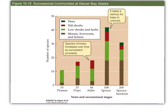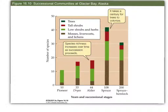Looking at how vegetation has changed over the years in terms of species richness — just the number of species, not taking into account relative abundances — this is years in successional stages: 10 years for pioneer, 33 years to the Dryas stage, not up to spruce-hemlock until 200 years. Species richness is increasing over time, and it takes a century for trees to actually colonize. The final climax spruce-hemlock community isn't reached until about 200 years. The number of herb and low shrub species has actually declined, but the dominance of trees is higher by the final stage.